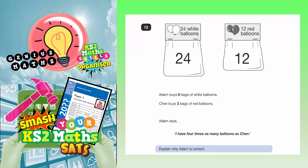Let's go back to the facts we've been given. Adam is buying six bags of white balloons. The white balloons are here, and in each bag there are 24. So we need 24 times 6. Let's take advantage of this space to work that out.